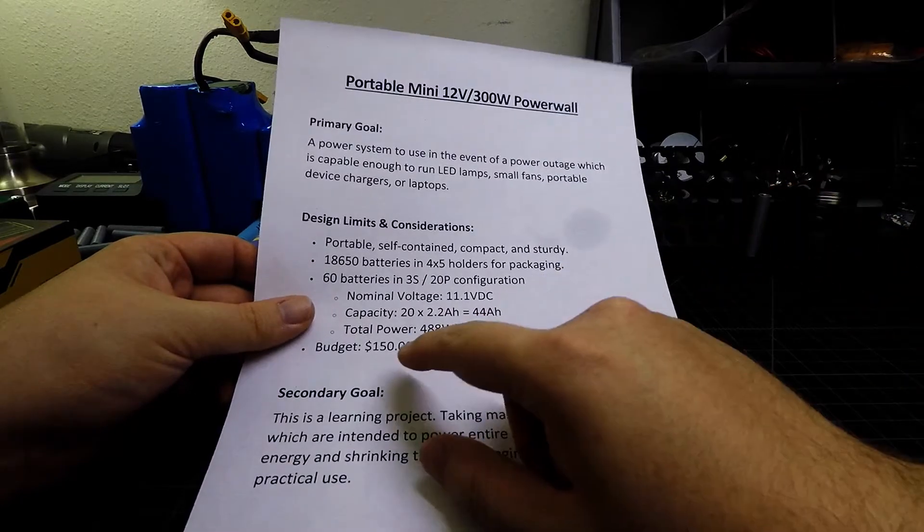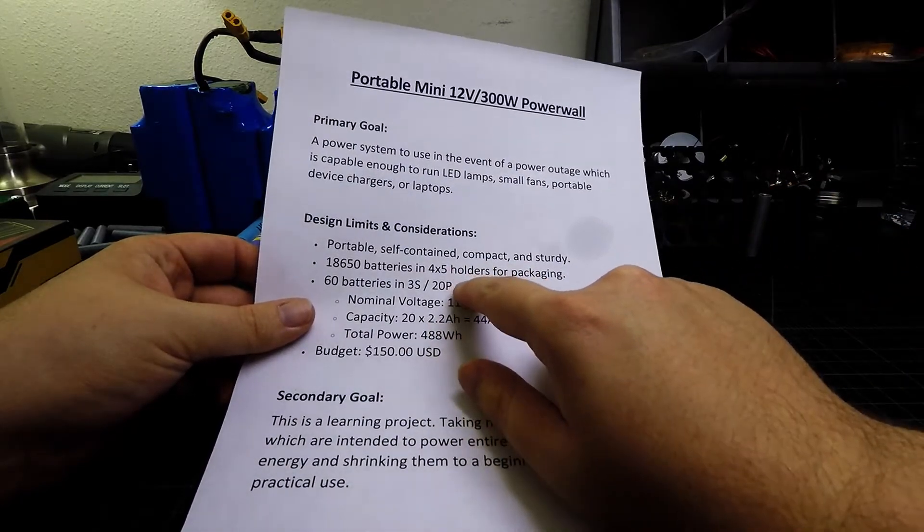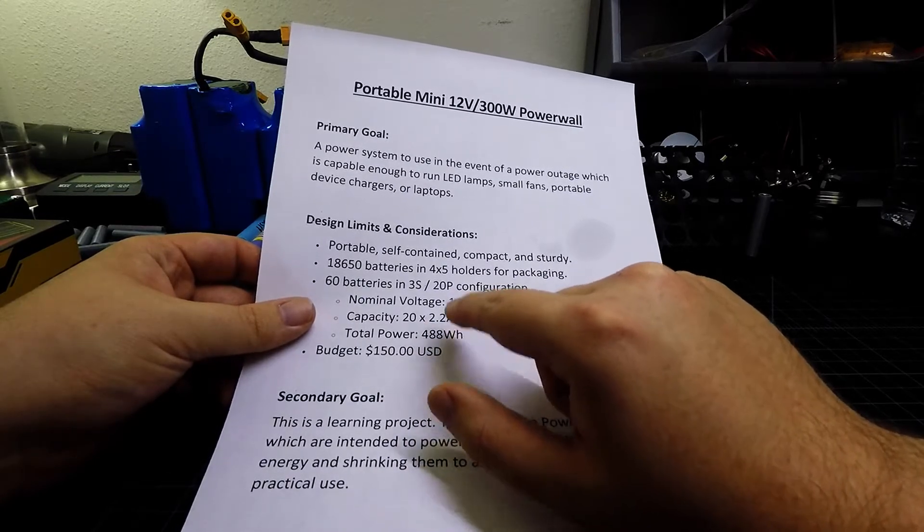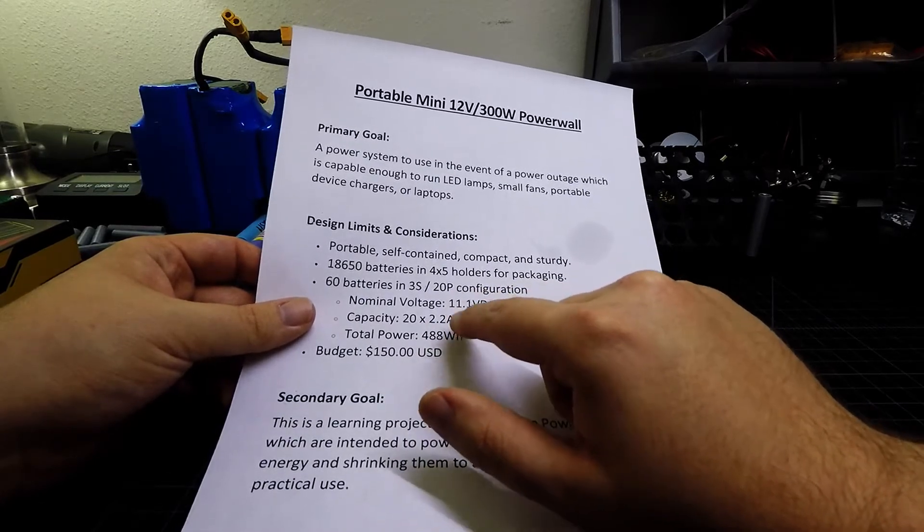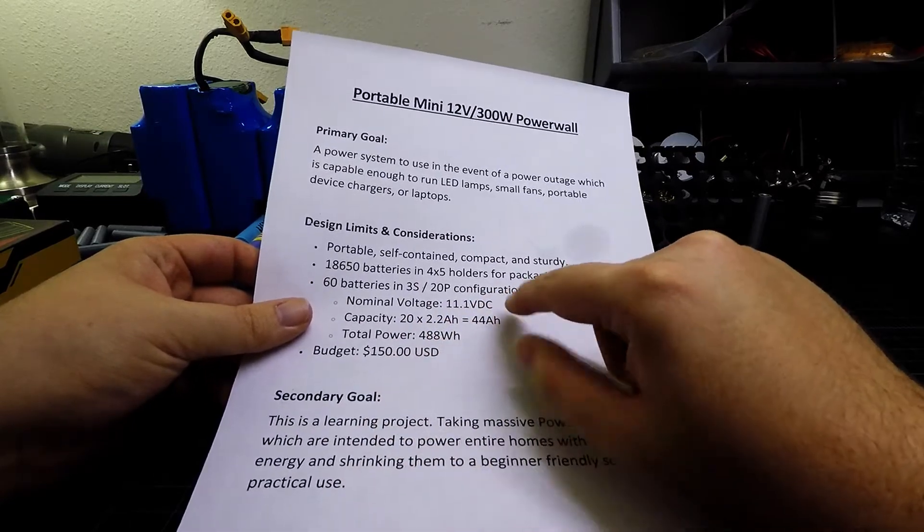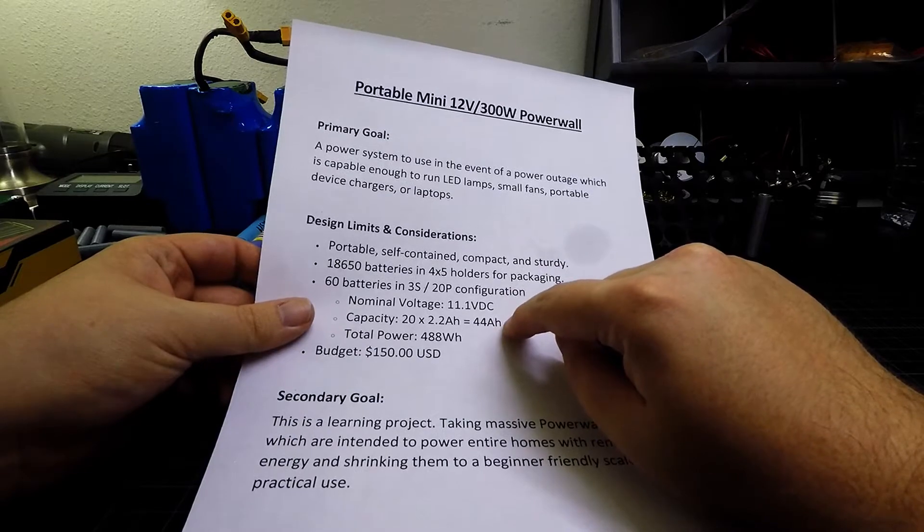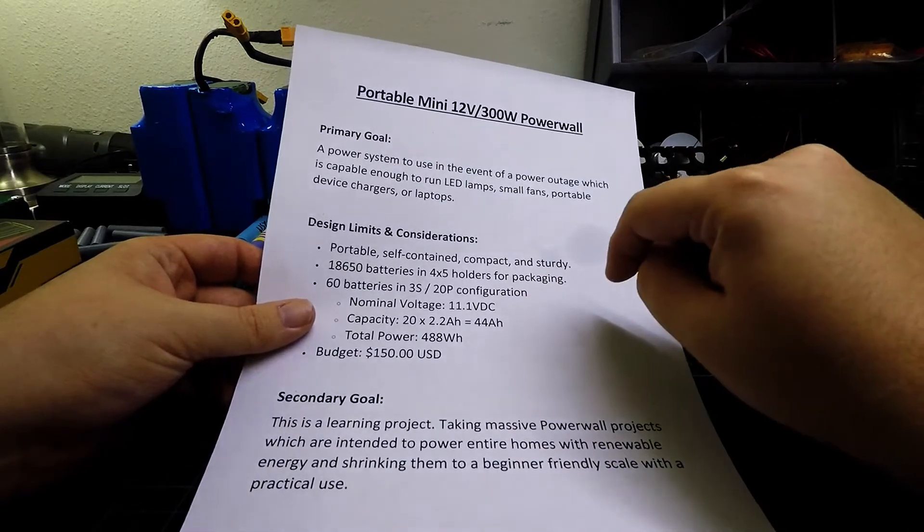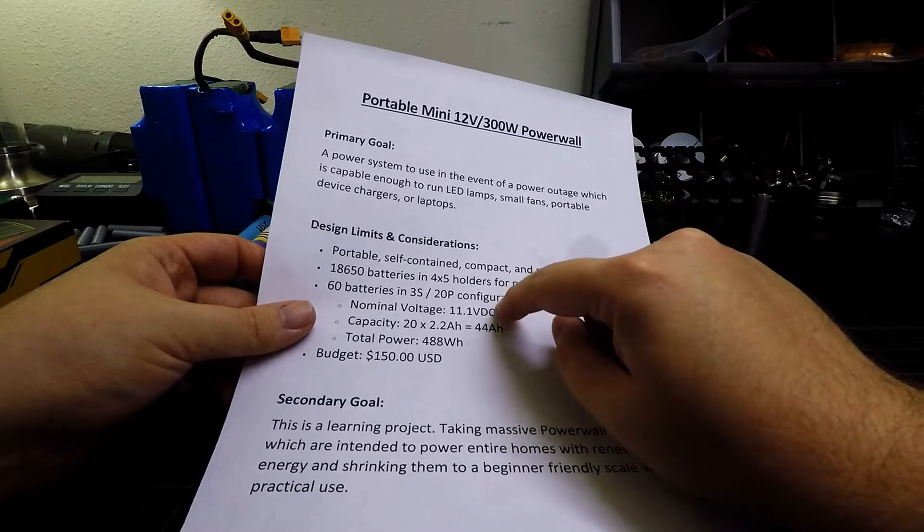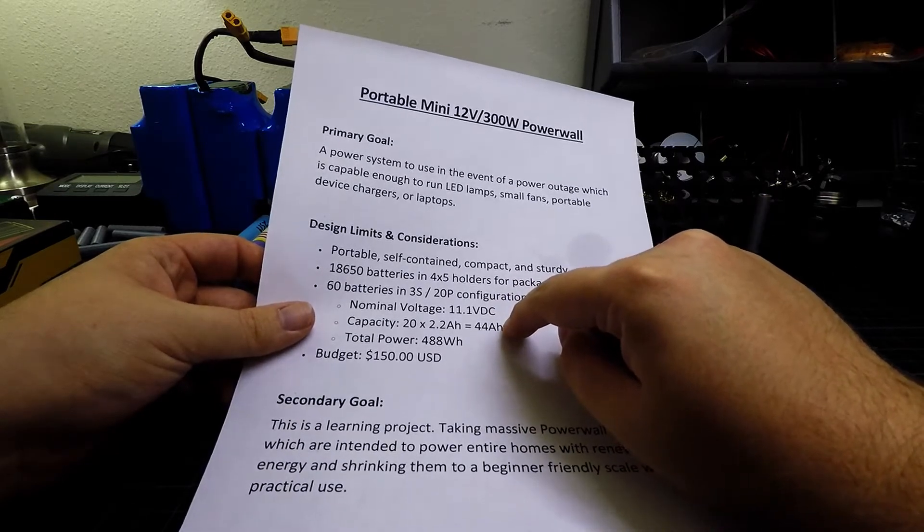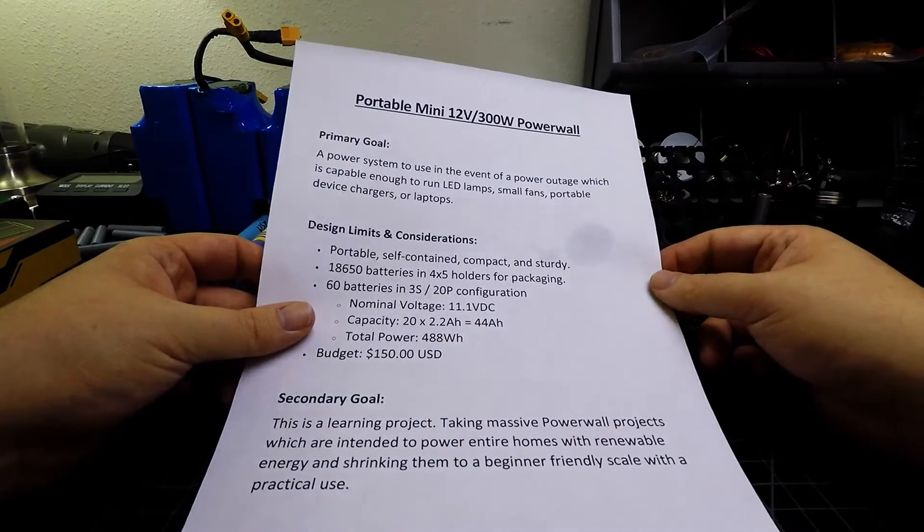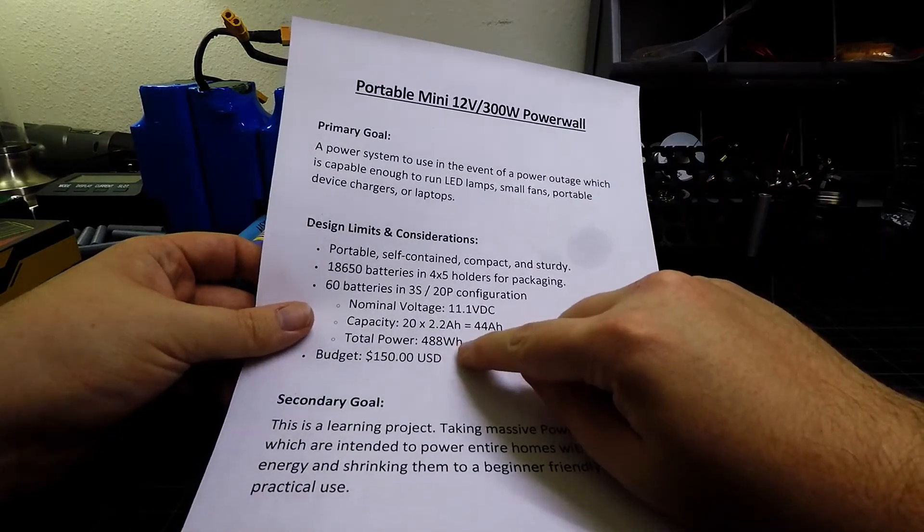So because we're taking a 20 parallel configuration, when I'm intending to use 2.2 amp hour or 2200 milliamp hour batteries and there's 20 of them, you can multiply that together and that's going to turn out to create a 44 amp hour battery pack. And then you can turn that into a total power output by taking your voltage, multiplying that by your capacity, which is 44 amp hours, and we're going to have a total power output of 488 watt hours.